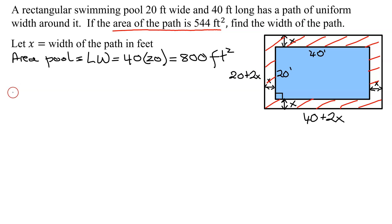So now the area of the pool plus the path is again length times width. The length is 40 plus 2x times 20 plus 2x.